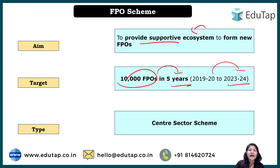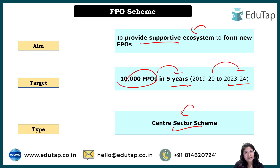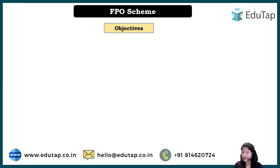Regarding the type of scheme: small and marginal farmers, even if they want storage facilities, a tractor, or other equipment, do not have money. That is why initially financial support will be provided by the government. This financial support is borne entirely by the central government, making it a Central Sector Scheme. The state will help form the FPOs and train them, but the financial funding will be done by the central government only.